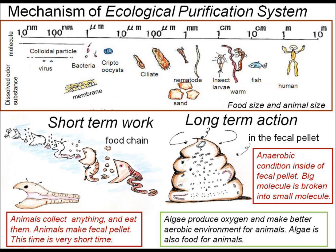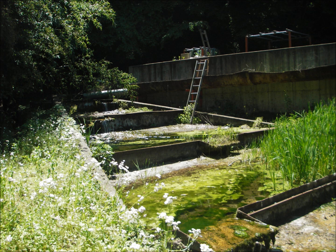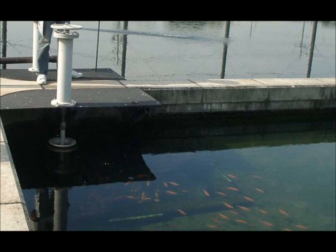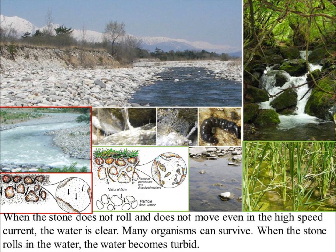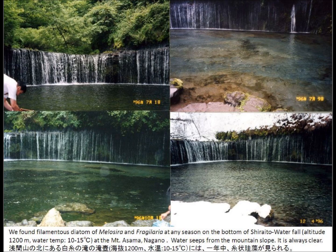The slow sand filter system was originated in the UK. In Japan, this system has been refocused as an ecological purification system. This is a new idea and new concept from Japan. We have to rename it the ecological purification system for safe drinking water.